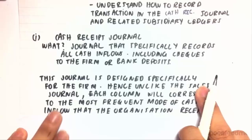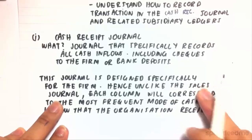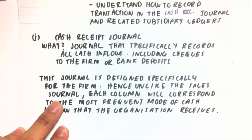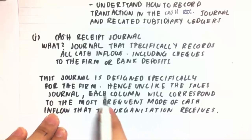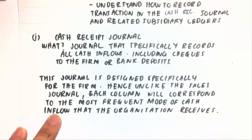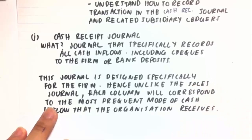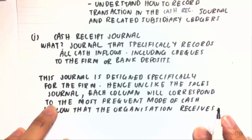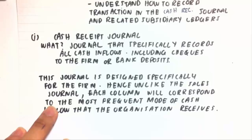If you remember the sales journal, all those columns and categories in them are always fixed and always the same. Whereas in this journal, each column will correspond to the most frequent mode of cash inflow. For example, if we mostly receive revenue through sales, we'd include sales revenue, accounts receivable and cash at bank. Whereas if we receive cash inflow by another means, we'd have to insert another means of credit into the journal.